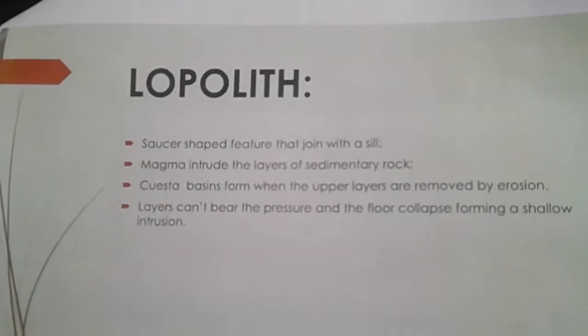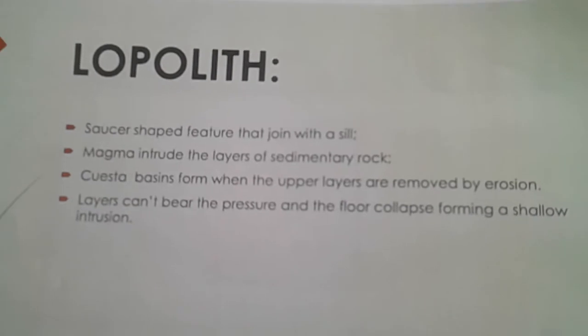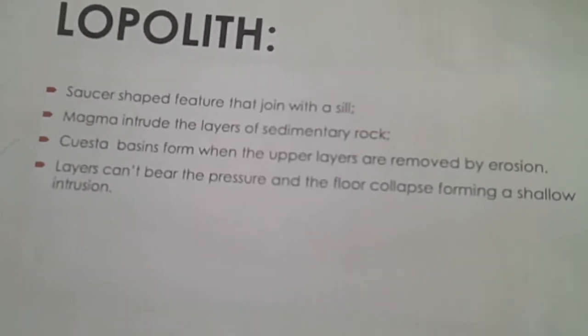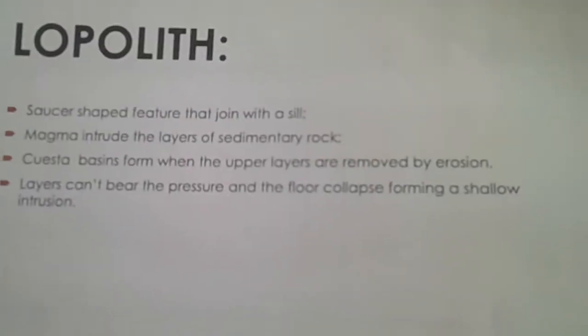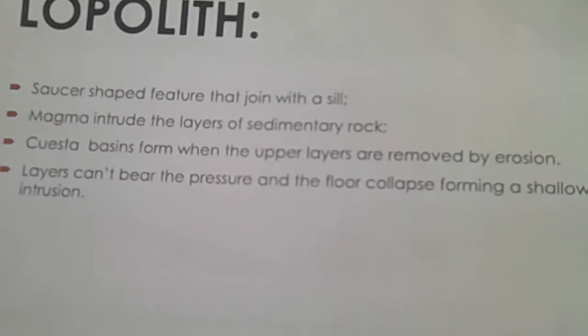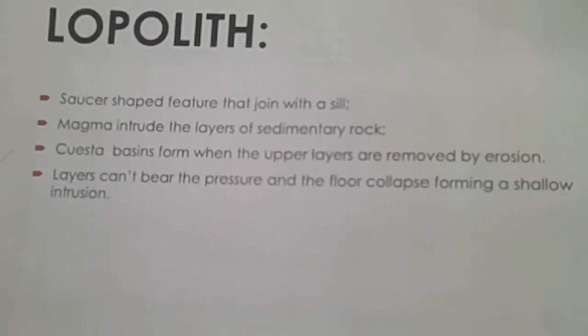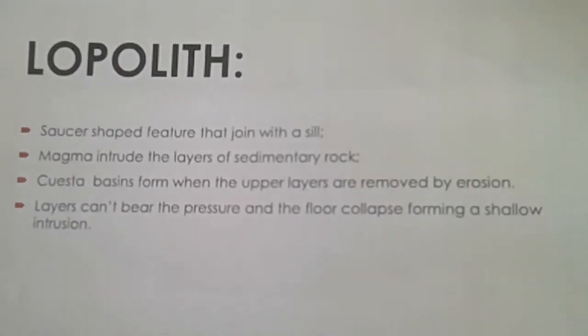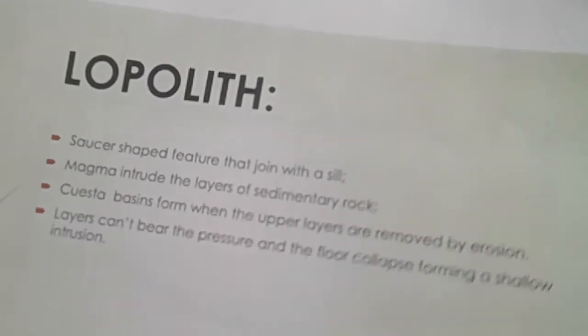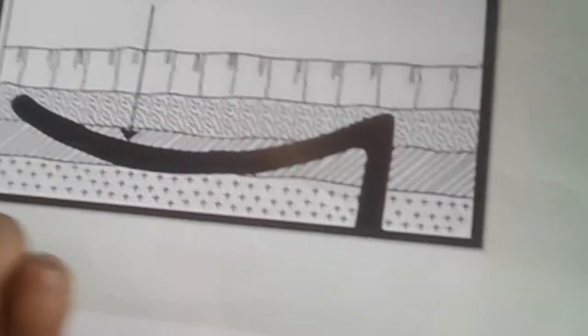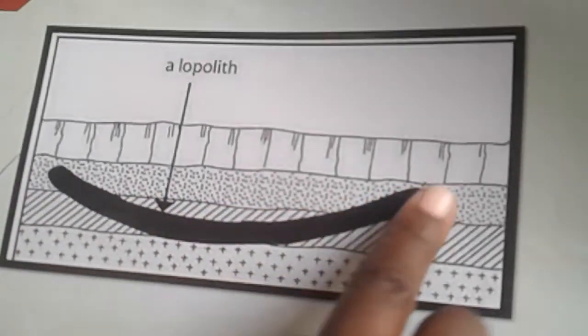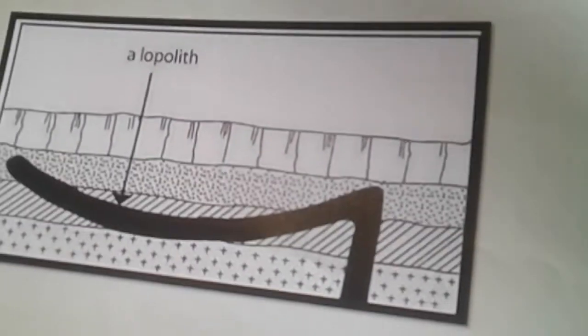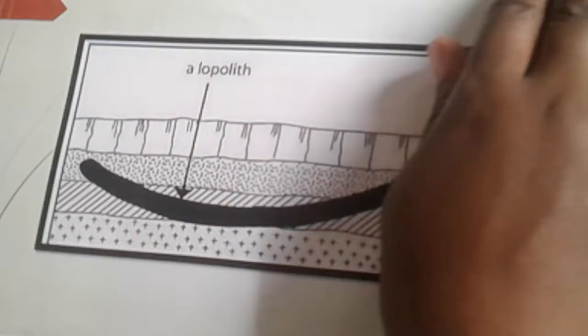The lopolith is the saucer-shaped intrusion. Magma intrudes the layers of sedimentary rocks, and when the layers cannot bear the pressure the floor collapses, forming shallow intrusions. These shallow intrusions take on a saucer-like shape, which we call the lopolith.